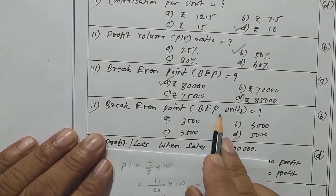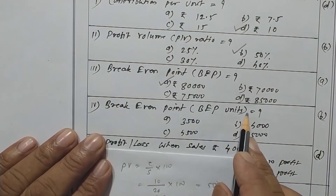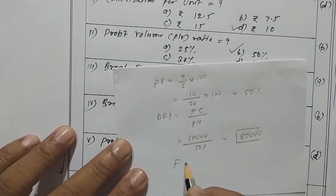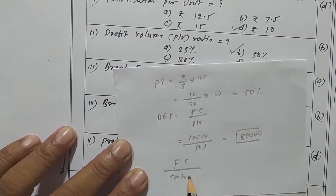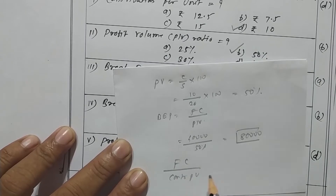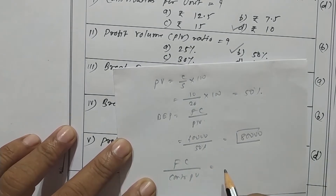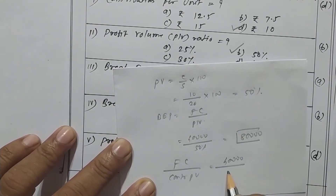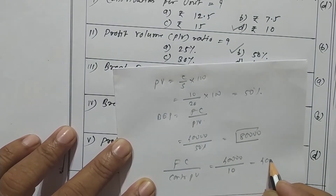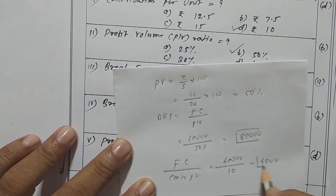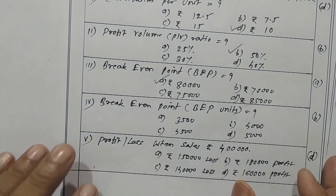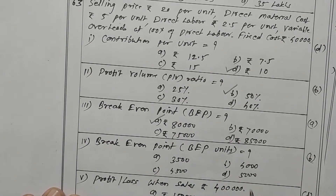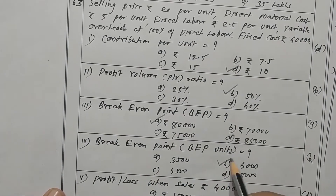Now BEP in units. The formula is fixed cost upon contribution per unit. Fixed cost is rupees 40,000 and contribution per unit is rupees 10, so the answer is 4,000 units. Option B is correct.